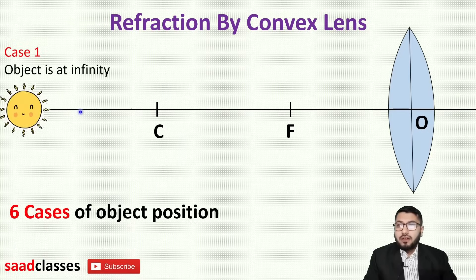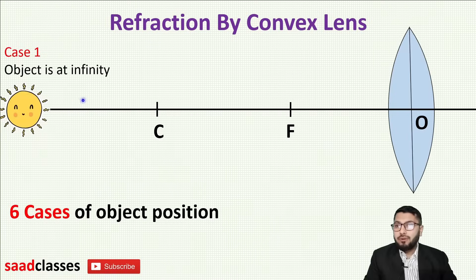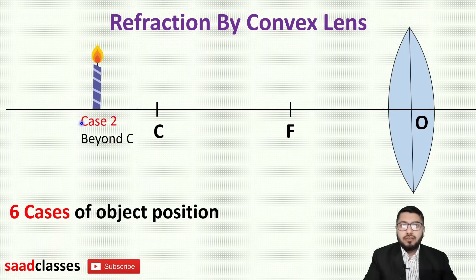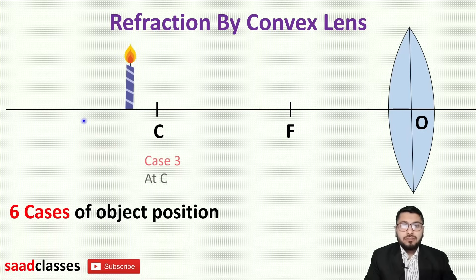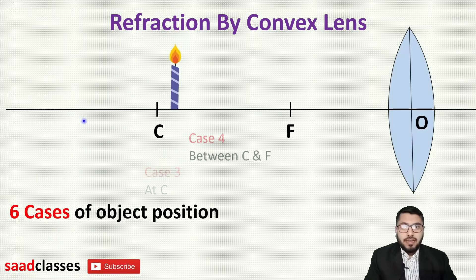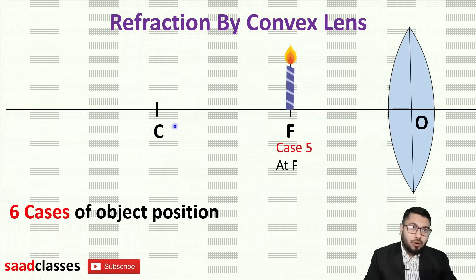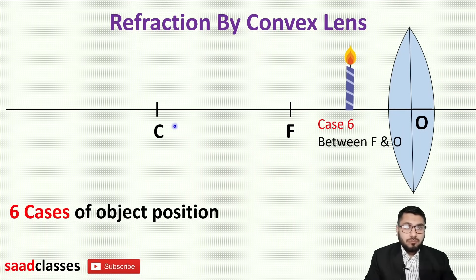Case number one: our object is at infinity. I will bring my object closer in every step. Next it will be beyond C, that is, away from the center of curvature. Then I will bring my object to the center of curvature, that is C. Next case, I will bring it between C and F. The next case, my object will be at focus. And the last case — case number six — I will bring my object between focus and optical center.